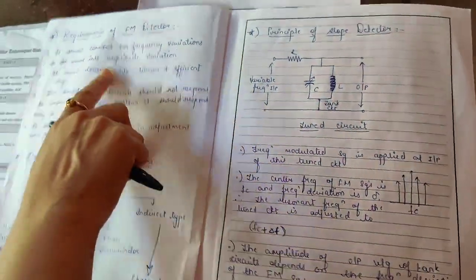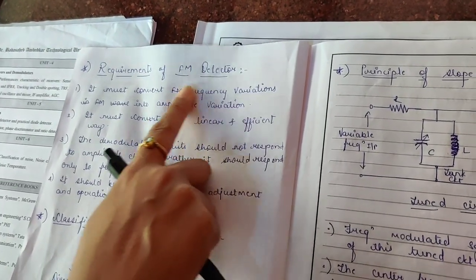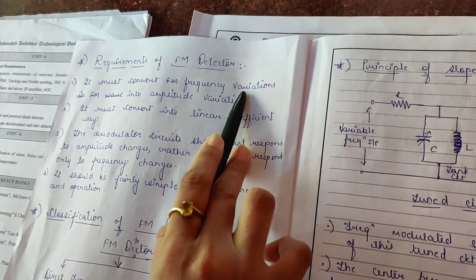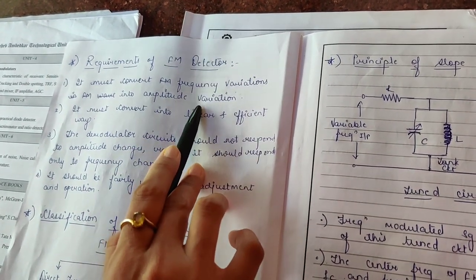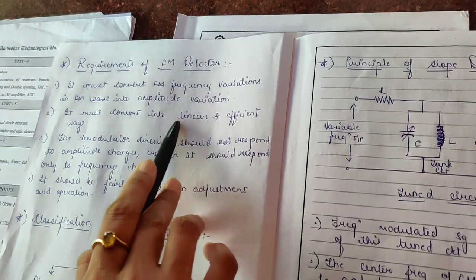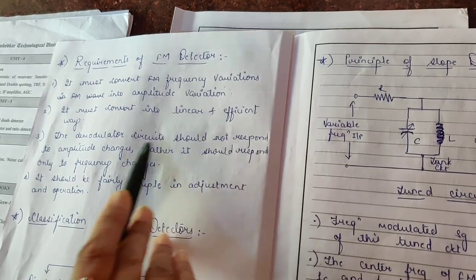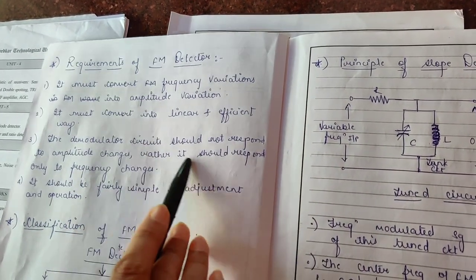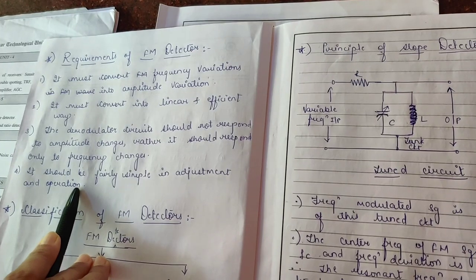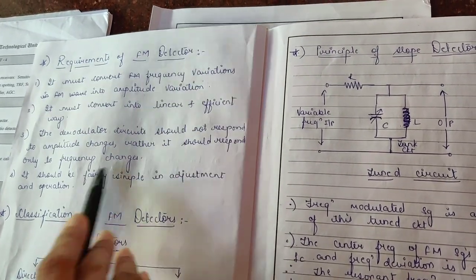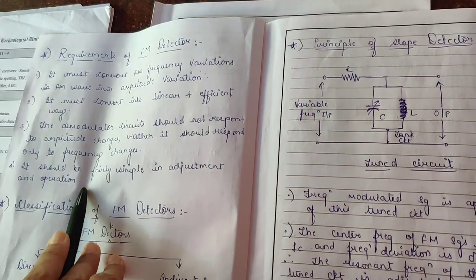Let us see the requirements of FM detectors. The first requirement is that it must convert frequency variations into amplitude variations. Second, it must do so in a linear and efficient way. Third, the demodulator circuit should not respond to amplitude changes but rather only to frequency changes. And the last requirement is that it should be fairly simple in adjustment and operation — the circuit and its operation should both be simple.